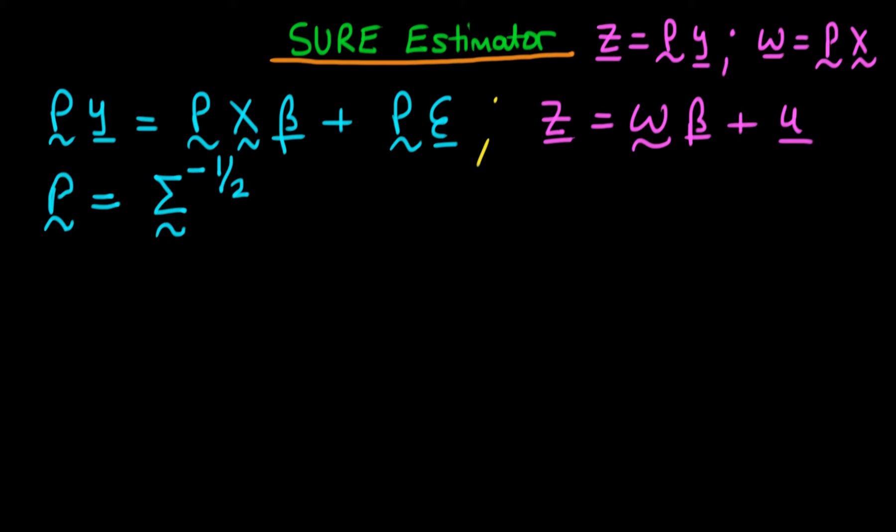We also rewrote the system in terms of simpler coordinates, and this is going to be useful in this video. So essentially what a Schur estimator is, is just doing OLS on the transform system. If we calculate the OLS estimator on this transform system, that's actually going to yield us the Schur estimator.